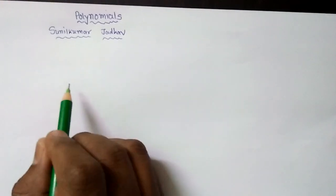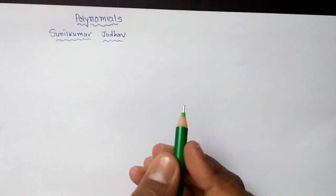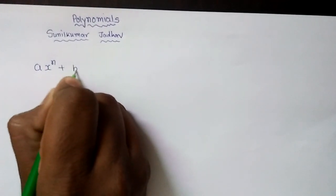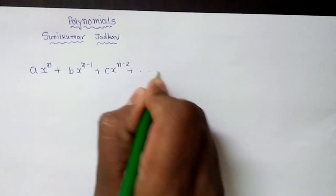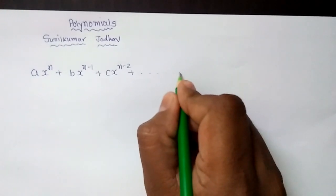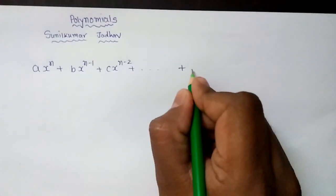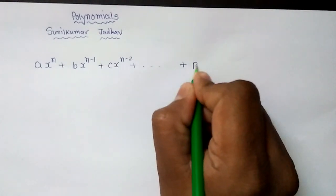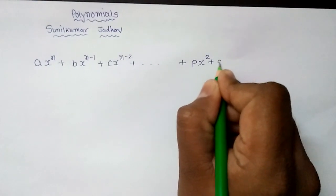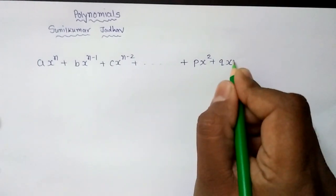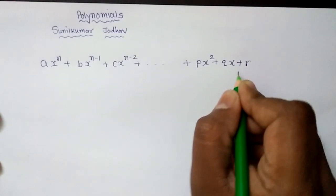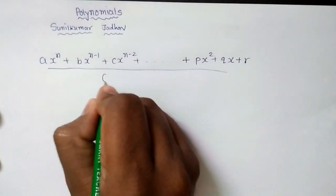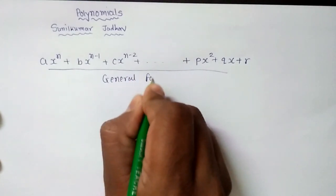Let's try to understand what is polynomial. First of all we will discuss the general form of polynomial. The general form is: a into x raise to n, plus b into x raise to n minus 1, plus c into x raise to n minus 2, and so on, up to p into x raise to 2, plus q into x, plus r into x raise to 0 — and x raise to 0 equals 1, so the last term is simply r. This is the general form of the polynomial.